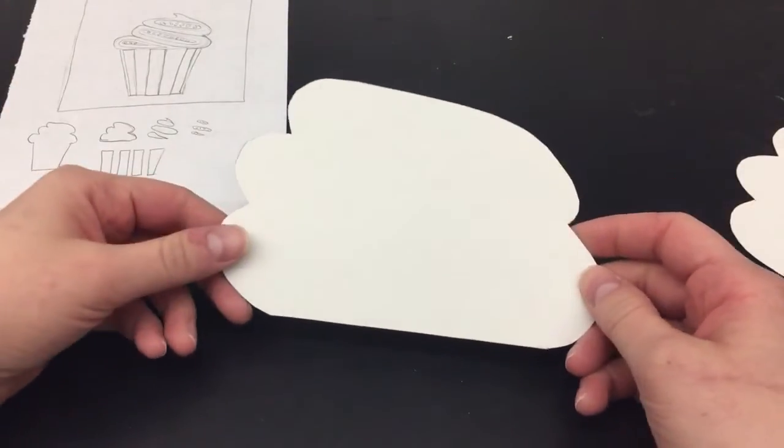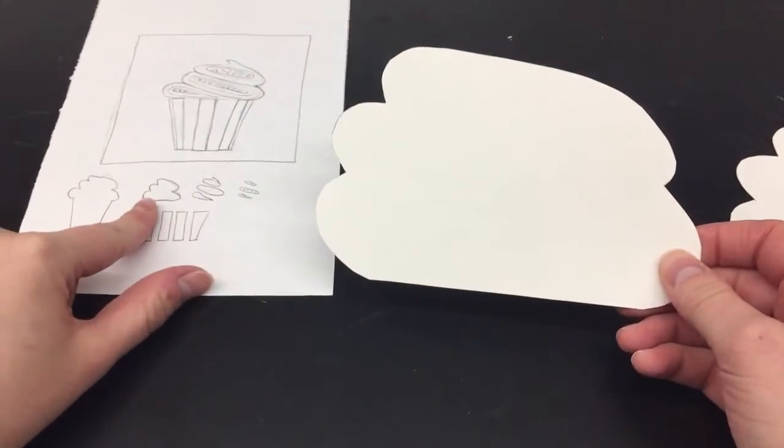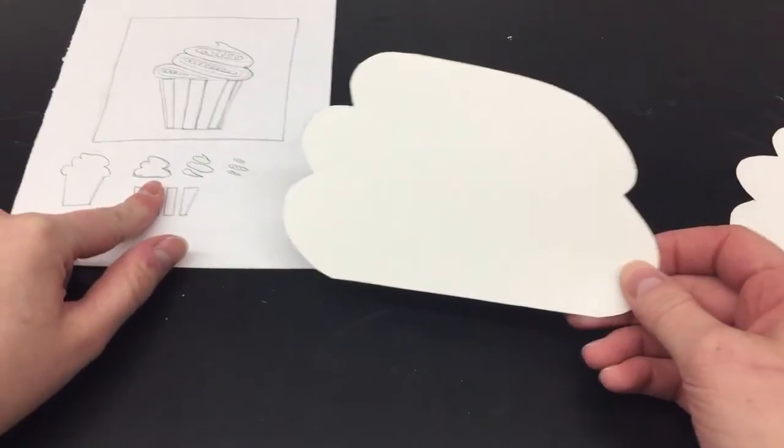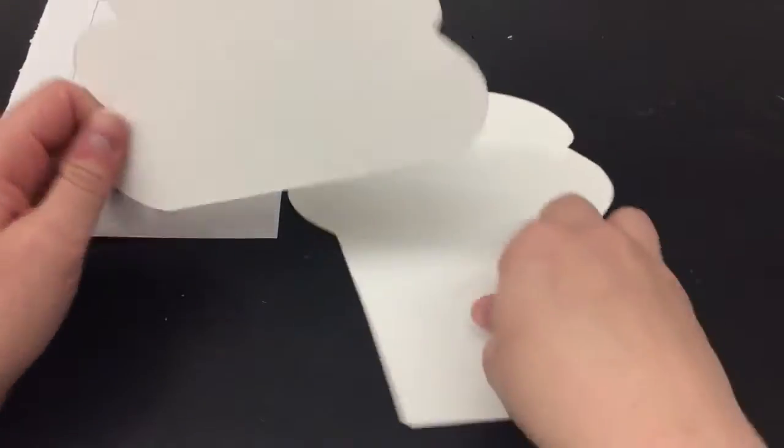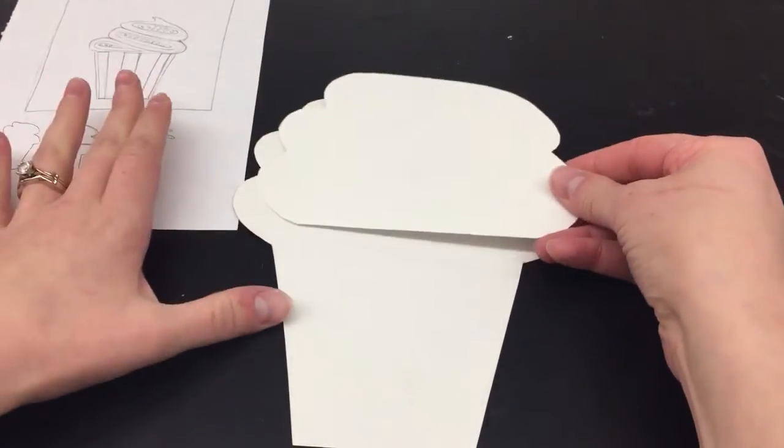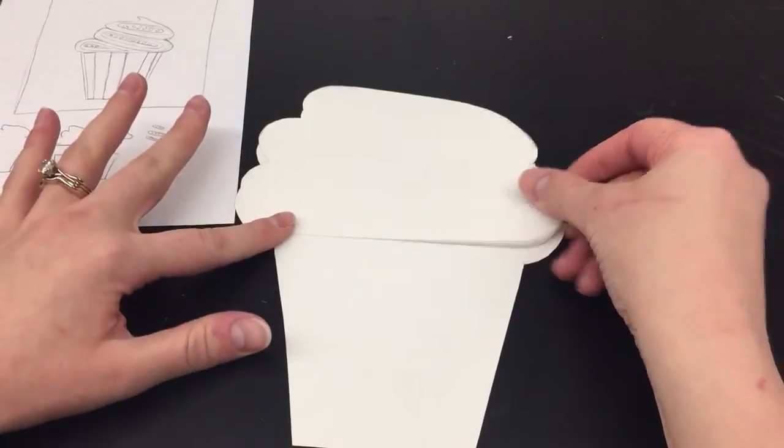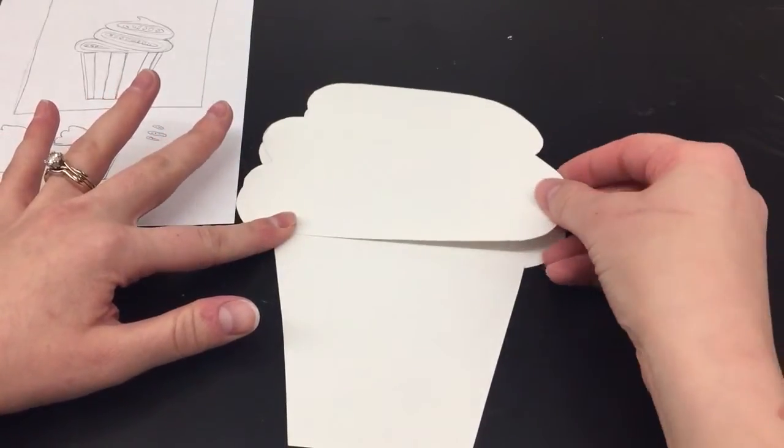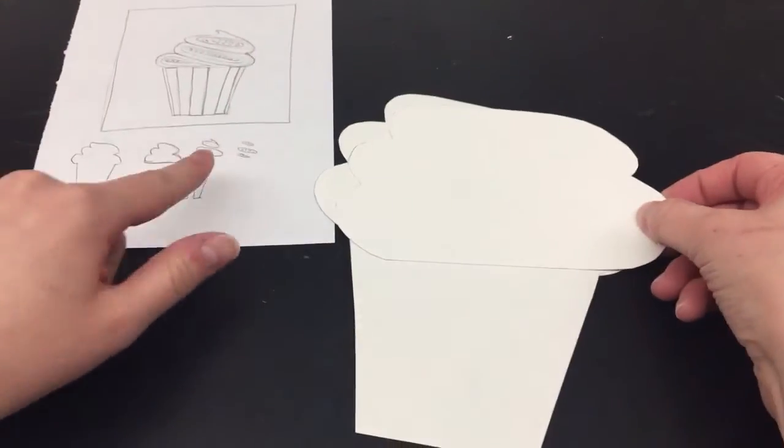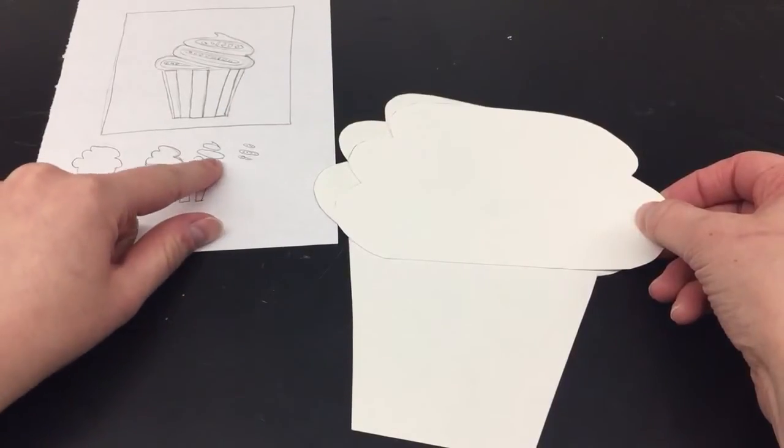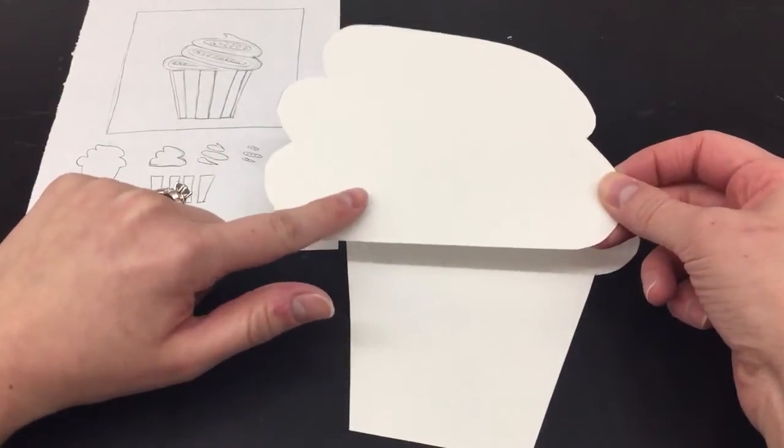I have just cut out this top part of the frosting for my cupcake as a second layer. So my base that I started with and now I have that second layer that I can put on top of my cupcake. And now I need to cut out these three separate shapes that will fit on top of this second layer.